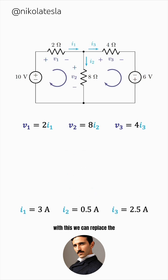With this, we can replace the three currents, so V1 will be 2 times 3, which is 6. V2 is 8 times 0.5, which is 4. And V3 is 4 times 2.5, which is 10 volts.